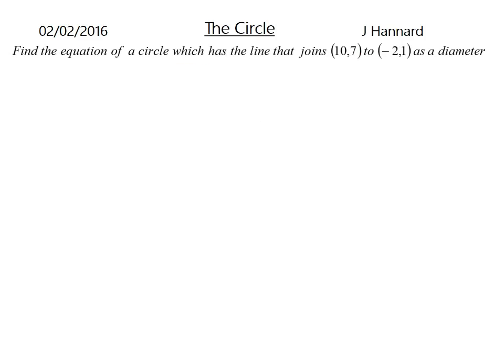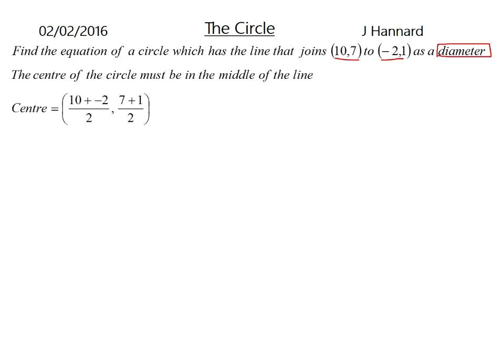This is just a little extension. Find the equation of a circle which has the line that joins 10, 7 and minus 2, 1 as a diameter, so that is a keyword there, diameter. The centre of the circle must be in the middle of the line. So this brings back a little bit more theory from a few lessons ago, the midpoint of a line, which is remember, the average of the x's and the average of the y's. So 10 plus minus 2 over 2, comma, 7 plus 1 over minus 2. So the centre is 4, 4.